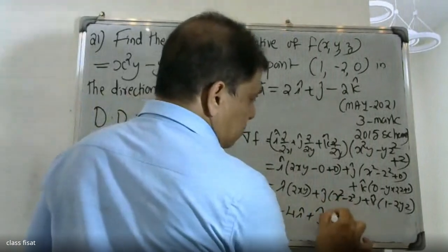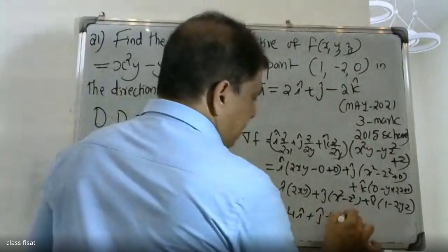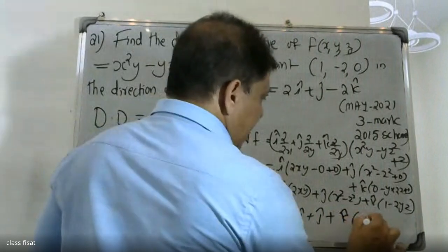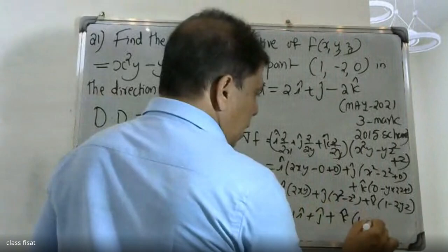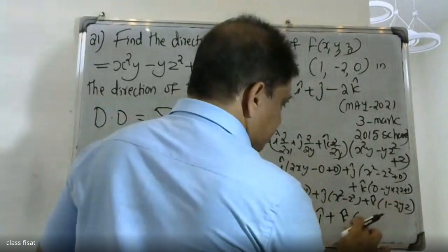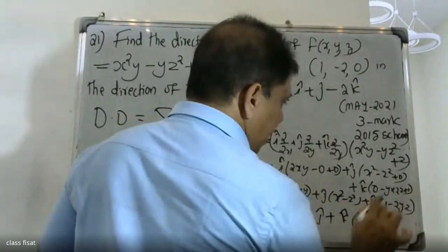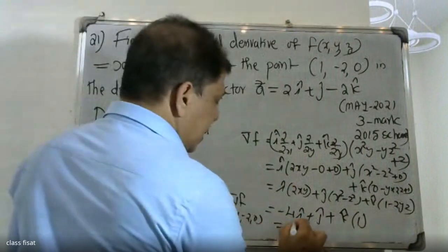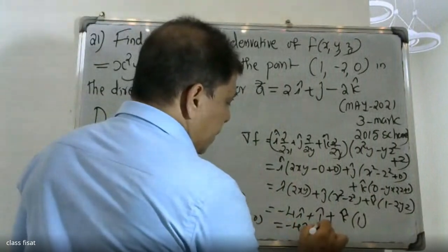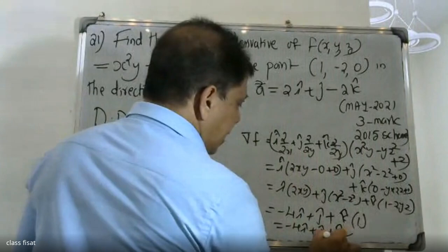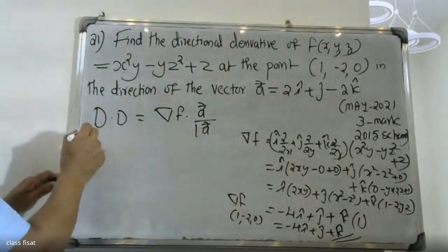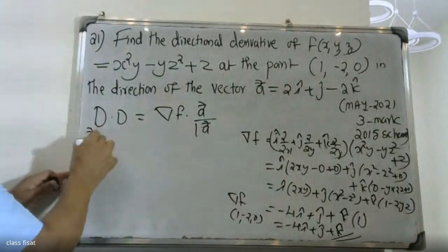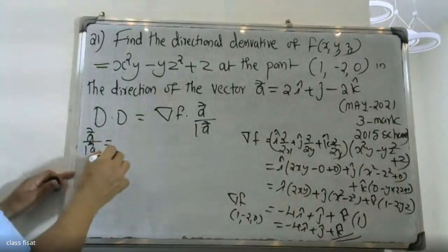So gradient f at the point is -4i + j + k. Now for the directional derivative, I need vector a divided by modulus of a.